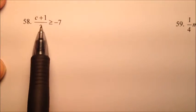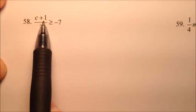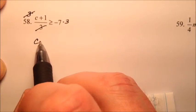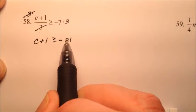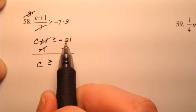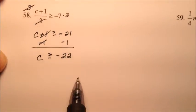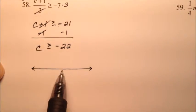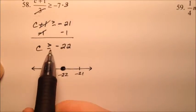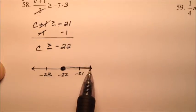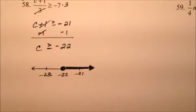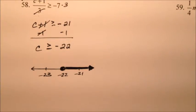Number 58 has the quantity C plus 1 divided by 3, greater than or equal to negative 7. Multiply both sides by 3 to eliminate the fraction. The 3s cancel, leaving C plus 1 greater than or equal to negative 21. Subtract 1 from both sides: those 1s cancel, giving C is greater than or equal to negative 22. Graph: closed circle at negative 22 since it includes equals, line extending to the right. Solution: C is greater than or equal to negative 22.